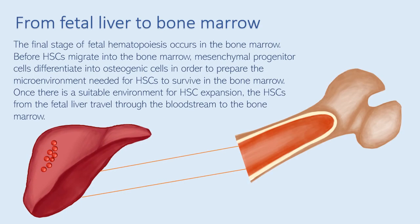The final stage of fetal hematopoiesis occurs in the bone marrow. Before hematopoietic stem cells migrate into the bone marrow, mesenchymal progenitor cells differentiate into osteogenic cells to prepare the microenvironment needed for hematopoietic stem cells to survive. Once there is a suitable environment for HSC expansion, the HSCs from the fetal liver travel through the bloodstream to the bone marrow.